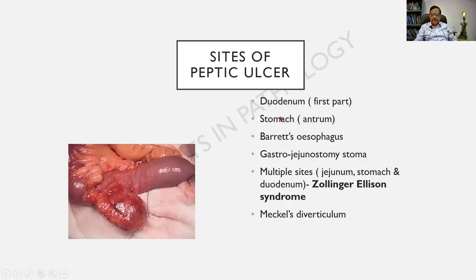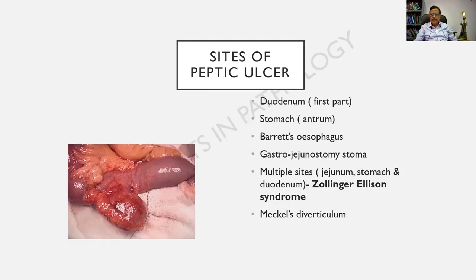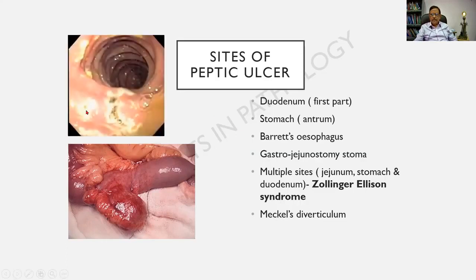What are the other sites of peptic ulcer? One is the duodenum (first part) and the stomach. It can also occur in Barrett's esophagus, at a gastrojejunostomy stoma, and in multiple sites such as jejunum, stomach, and duodenum in Zollinger-Ellison syndrome. It is also common in Meckel's diverticulum, where there is a projection from the intestine. Most commonly, 95 to 98% will be in the duodenum and stomach in the ratio of 4 to 1. An endoscopic image shows multiple ulcers at varying stages, which could represent Zollinger-Ellison syndrome.